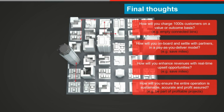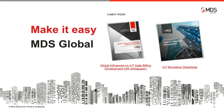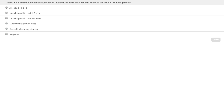You'll find a lot of information from Stephen's survey report, as well as information about our use cases, customers, and capabilities on our white papers on our website — the links are there on the screen. We're now going to go to our second poll question. Do you have strategic initiatives to provide IoT enterprises more than network connectivity and device management? The responses are: already doing so, launching within the next one to two years, launching within the next two to five years, currently building the services, currently designing the strategy, and no plans. What fascinated me about the last video you showed, Akhil, was that when we talk about smart cities as an IoT application, it's a simple definition but there's such complexity of different opportunities — from street lighting to garbage can collection to traffic management to security. All of those present opportunities, and each one is a different monetization and billing opportunity.